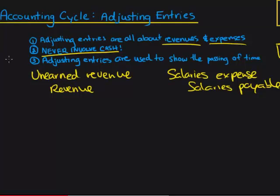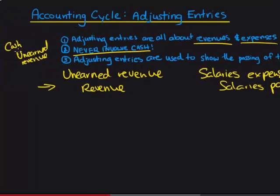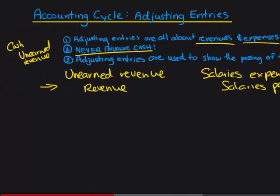You will have journal entries that do involve cash. For example, we earned revenue by writing down this adjusting entry, but the initial journal entry would look something like this: cash being debited and unearned revenue being credited. That means we received cash for a service we haven't performed yet. When we actually perform the service, we write down the adjusting entry which converts unearned revenue to revenue. So that shows that adjusting entries never involve cash.